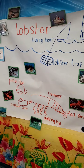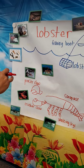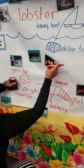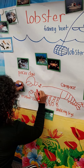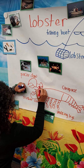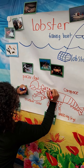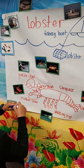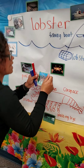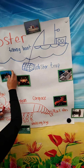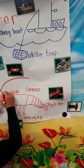The lobster also has eyes called eye stalks, and they are here on the lobster. And the last thing the lobster has are antennas. I'm going to draw the antennas — it has two antennas.